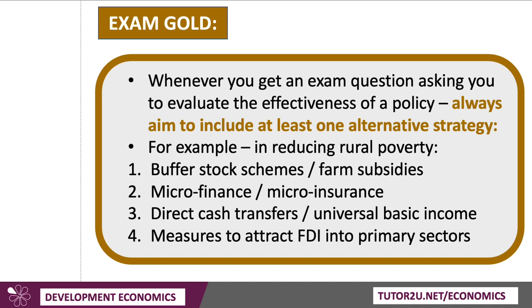Whenever you get an exam question asking you to evaluate the effectiveness of anything — fair trade, for example — if the word effectiveness appears in the question, always try to include at least one alternative. Consider buffer stock schemes and farm subsidies, microfinance and microinsurance, direct cash transfers instead of fair trade prices, some form of universal basic income, or attracting foreign direct investment into primary sectors. Always try to address effectiveness by using at least one alternative strategy.